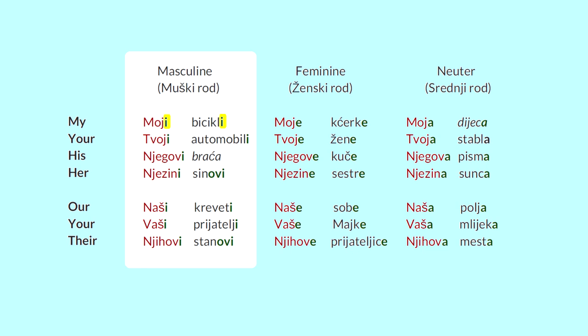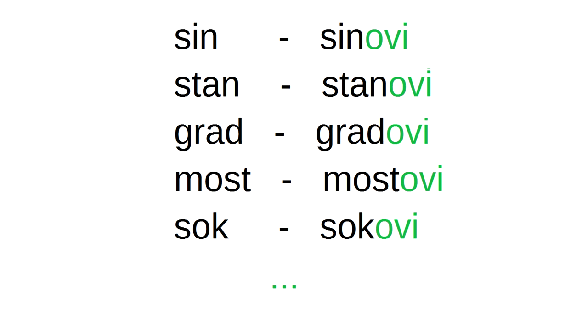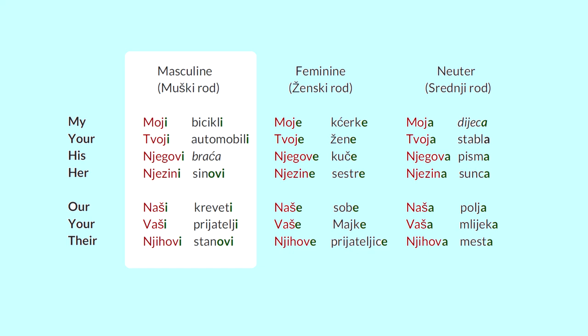Njegovi brača — that's phonetically changing, like an exception here. Незини сынови — her sons. So the shorter words like sin, stan, grad will get an -ovi ending: Сынови. Наши кревети — our beds. Ваши приятели — your friends. Станови — their apartments.